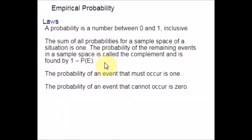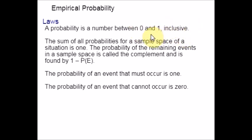Hope you are familiar with the definition now. Let's see the laws. Empirical Probability follows the laws of probability. Probability is just a number that lies between 0 and 1, inclusive — meaning it includes 0 and 1 also. The sum of the probabilities for a sample space of a situation is 1; that is, P(S) = 1.